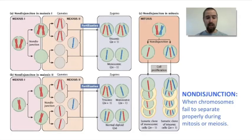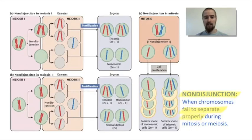This occurs because of something called non-disjunction, which is when chromosomes fail to separate properly during mitosis or meiosis. This is usually more serious when it occurs during meiosis, since the cells produced by meiosis are used for reproduction and could pass this kind of numerical chromosomal abnormality on to the next generation. But if it happens during mitosis very early in life — during embryo development, for example — it can also be very serious because it will be passed to many, if not all, of the cells in the mature body of that organism.